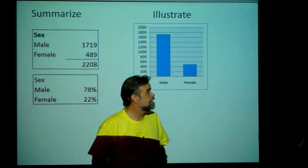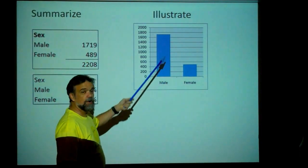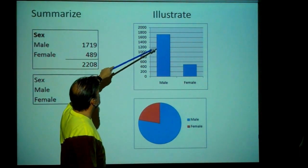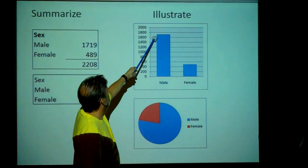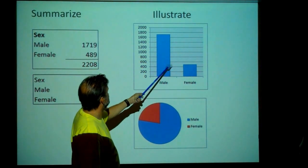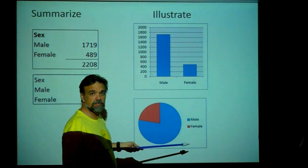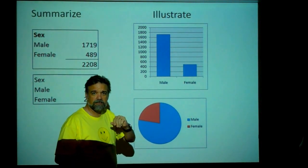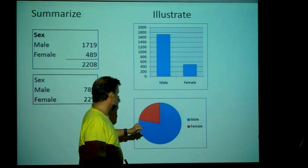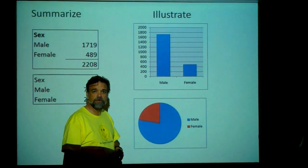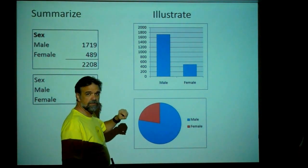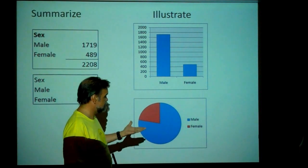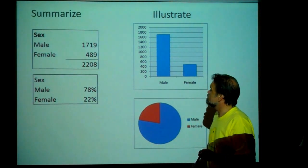We can illustrate these data with a bar chart or a pie chart. Bar charts are good for showing absolute numbers — about 1,700 males and about 500 females. Pie charts are much better at showing percentages. You can look at this and very quickly see that slightly more than three-quarters of the people on board were male. Pictures give us information really, really quickly.